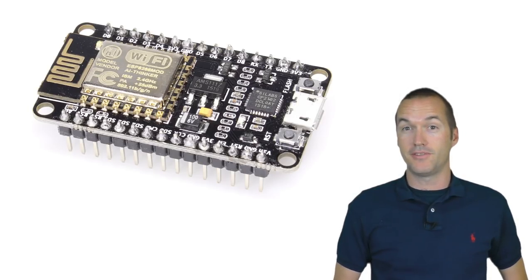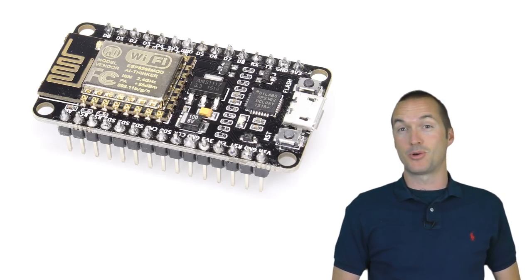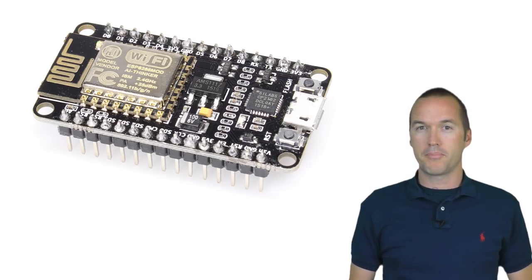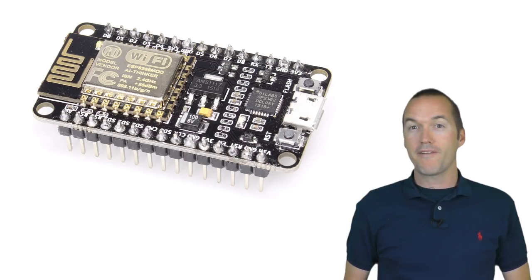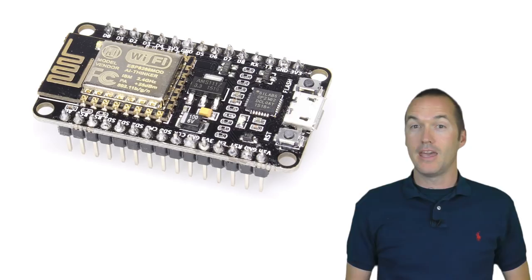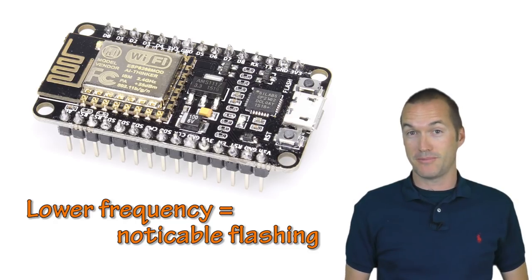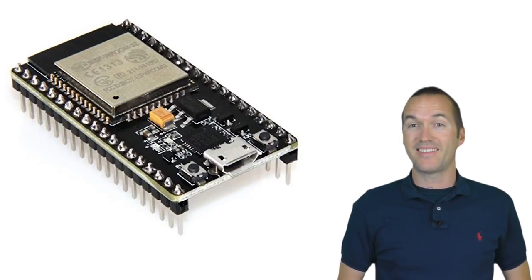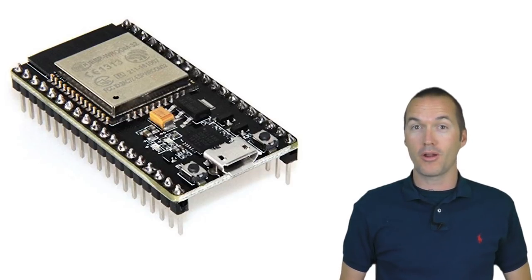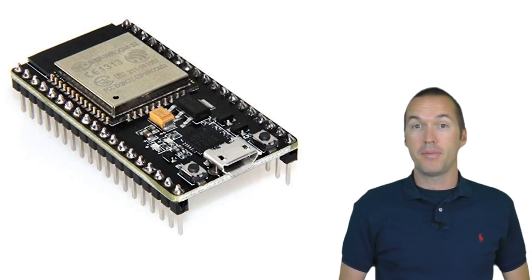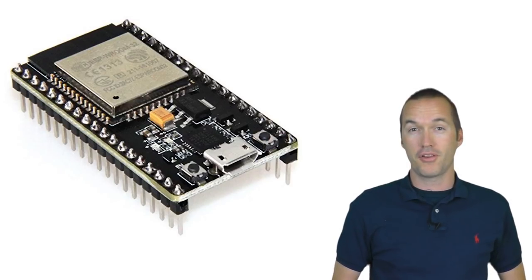I love the ESP8266-based NodeMCU and I use it for the vast majority of my projects, but it generates a PWM signal using software and processing power. This means that when WiFi traffic gets high or if you're using the processor for other calculations, it will lower the PWM frequency to compensate, which results in noticeable flashing. The ESP32 has 8 built-in independent hardware PWM channels, which are timers responsible solely for producing a consistent PWM signal at insanely high frequencies — up to 300,000 Hertz.